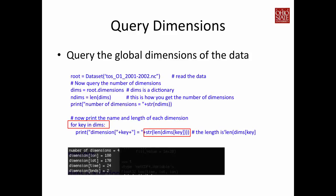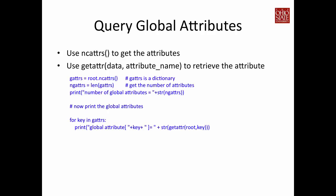The output shown is a screenshot from the code segment above. Now let's look at how to query global attributes. Remember, global attributes are the information related to the dataset. We already have a file open called root, and I'm going to use ncattrs to get attributes out from the dataset and assign them to the variable gattributes, representing global attributes.